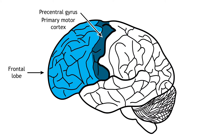The cerebral hemispheres of the brain are divided into four lobes. The frontal lobes are the most rostral, located in the front of the brain, and are responsible for higher-level executive functions like attention, critical thinking, and impulse control. They are the last brain region to fully develop, not completing development until individuals reach their twenties. The frontal lobes are also the location of the primary motor cortex, the region of the brain responsible for planning and executing movement. The primary motor cortex is located in the precentral gyrus.